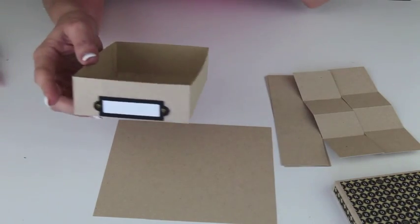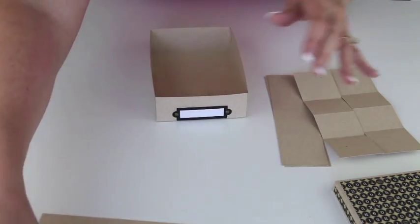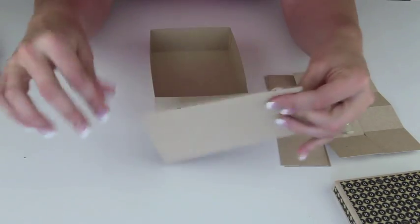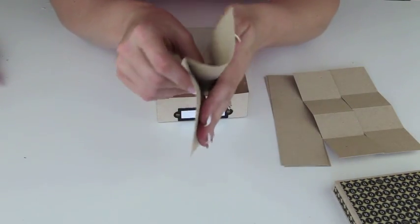And now all we need to do is put together our little divider pieces. In this large one you're just going to fold it right in half and you're going to fold the two side wings up.